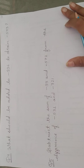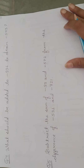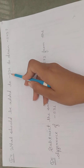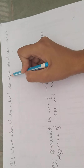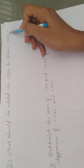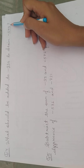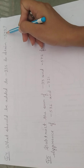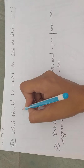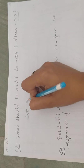Our next question is: what should be added to minus 936 to obtain minus 543? That means we add a digit to minus 936 and our answer is minus 543. So we need to find out which digit — let's call it x — when added gives us minus 543.